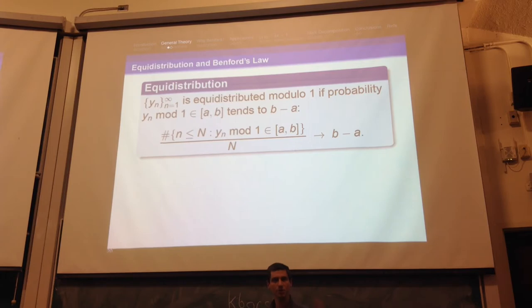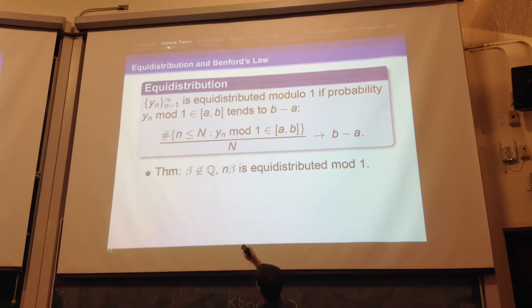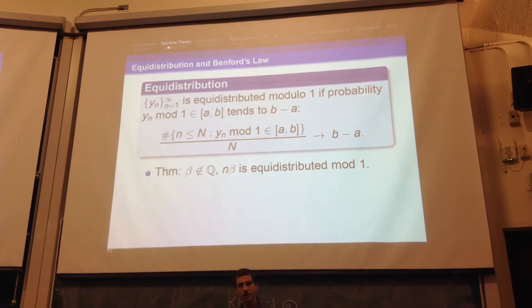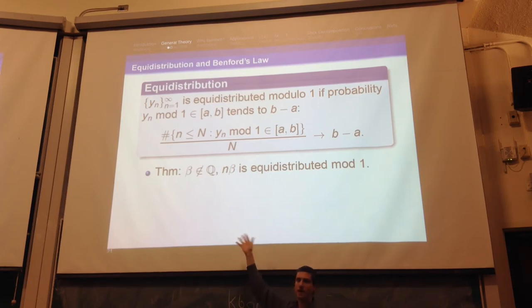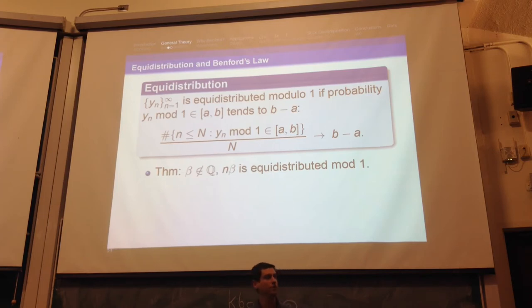The other concept we need is equidistribution. I'll look at numbers between 0 and 1 and say my sequence is equidistributed if the fraction of the time I land in a subinterval [a,b] is just the length of that subinterval. Here's a very nice theorem: if you take an irrational number beta, then n*beta is equidistributed mod 1. This is often called Kronecker's theorem. If beta is rational — say beta is 1/5 — then n*beta cycles: 1/5, 2/5, 3/5, 4/5, 0, 1/5, ... So for a rational number, it cycles and is not equidistributed.